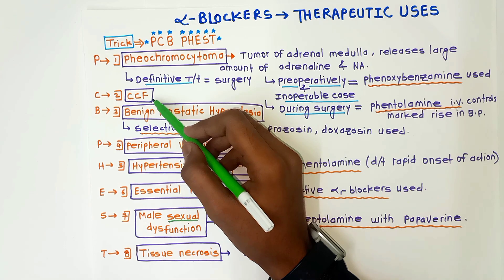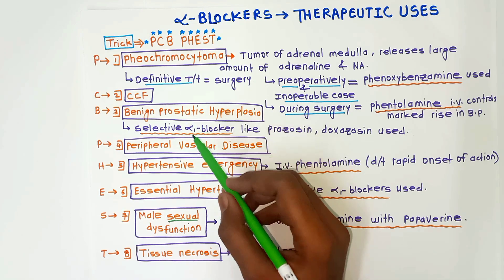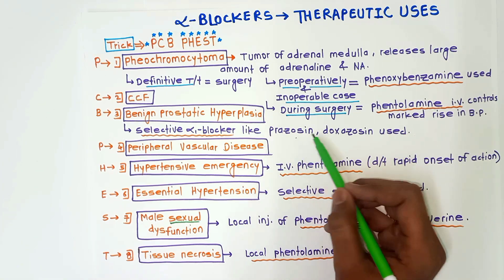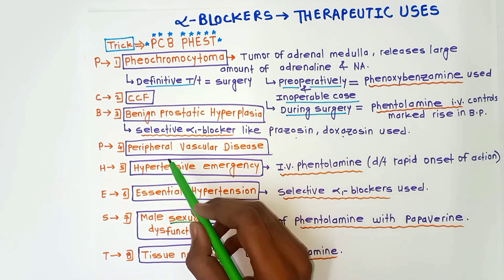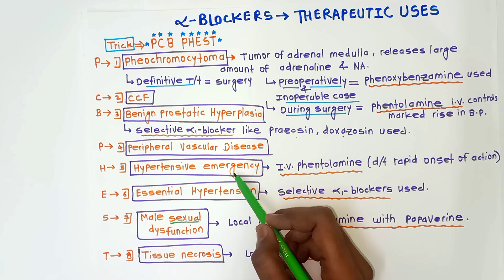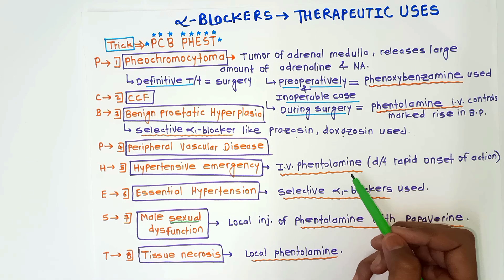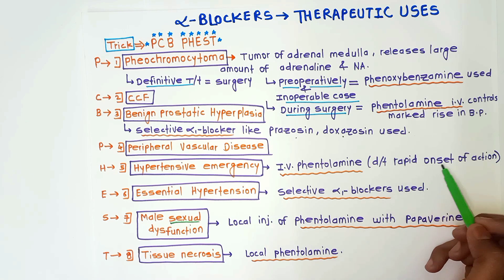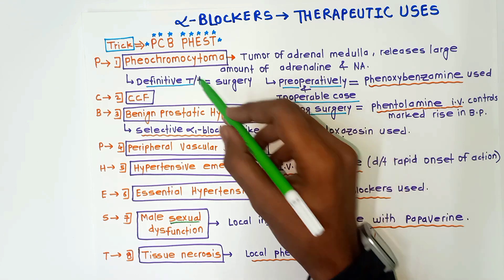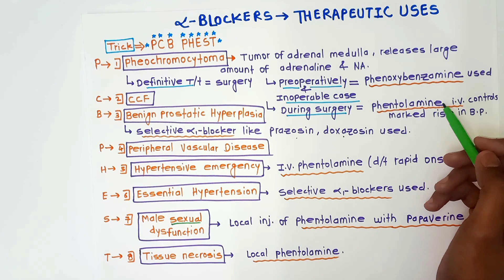The second use is C for congestive cardiac failure. Then benign prostatic hyperplasia — in this condition, selective alpha-1 blockers like prazosin and doxazosin are used. P for peripheral vascular disease. H for hypertensive emergency — in this case, intravenous phentolamine is used due to its rapid onset of action.